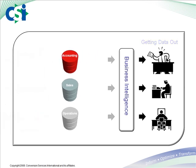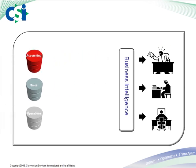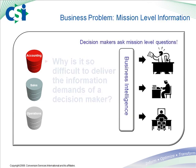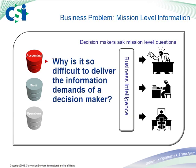Now that we understand the nature of data, we're going to talk about our second problem. We're going to focus on the decision makers in your company this time. This is commonly one of the most demanding groups in an organization, because the impact of an incorrect decision can be very expensive. One of the reasons it's so difficult to deliver information to a decision maker is that they don't see the organization from the myopic view of an application. They look at their reports from a mission level view, in order to measure their progress in meeting their mission statement.